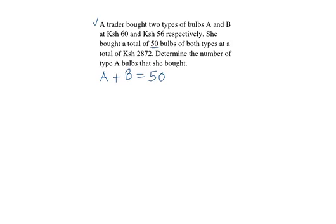If we take the number of bulbs for type A, that is A, we multiply by the cost for A, we will get 60. So we multiply by A.